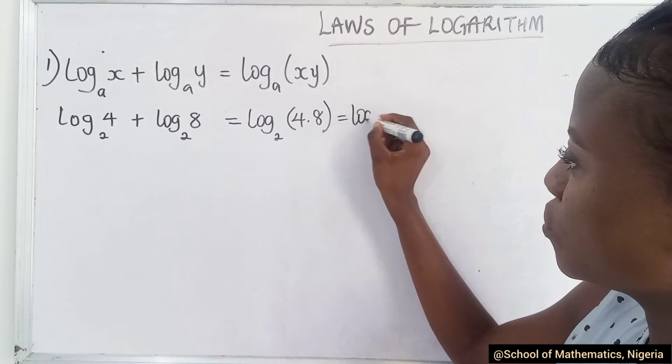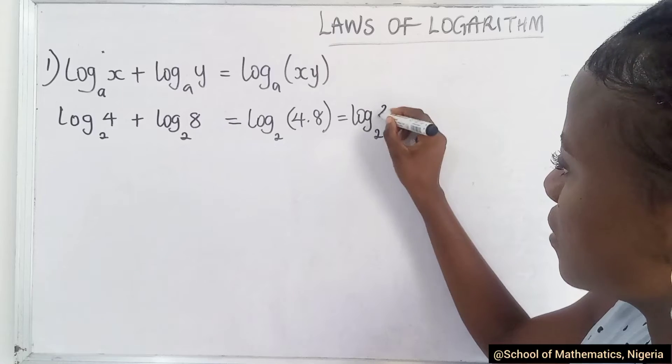So now you have log base 2, 4 times 8 is 32.